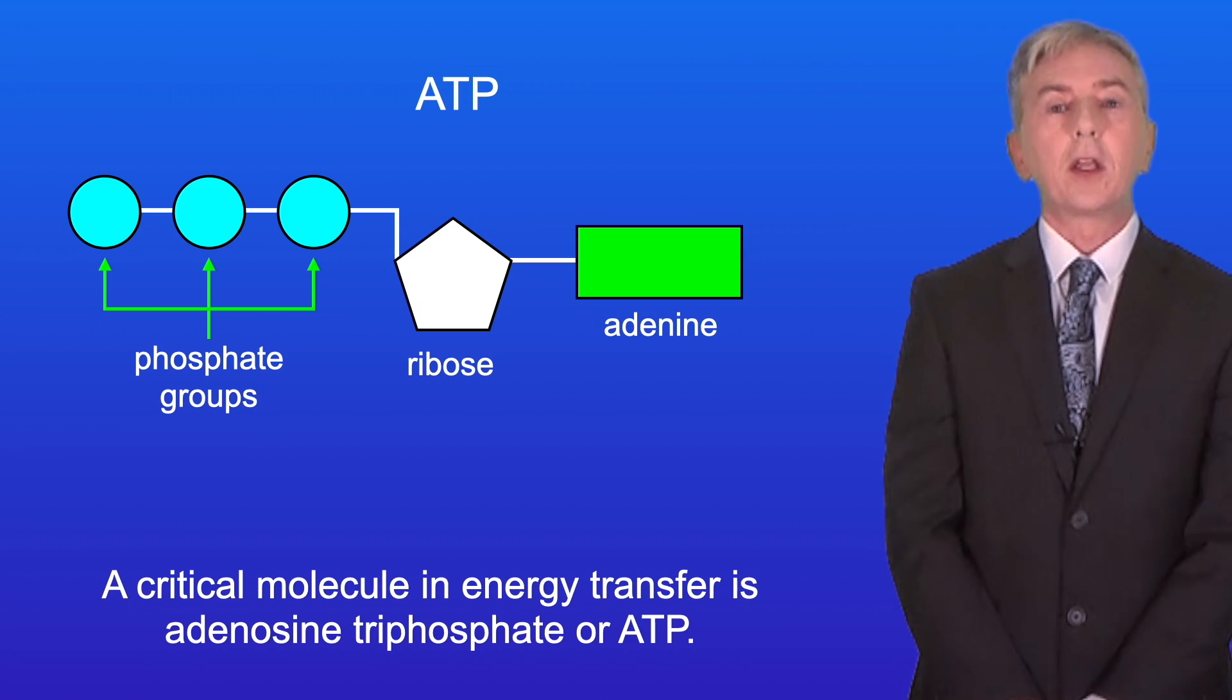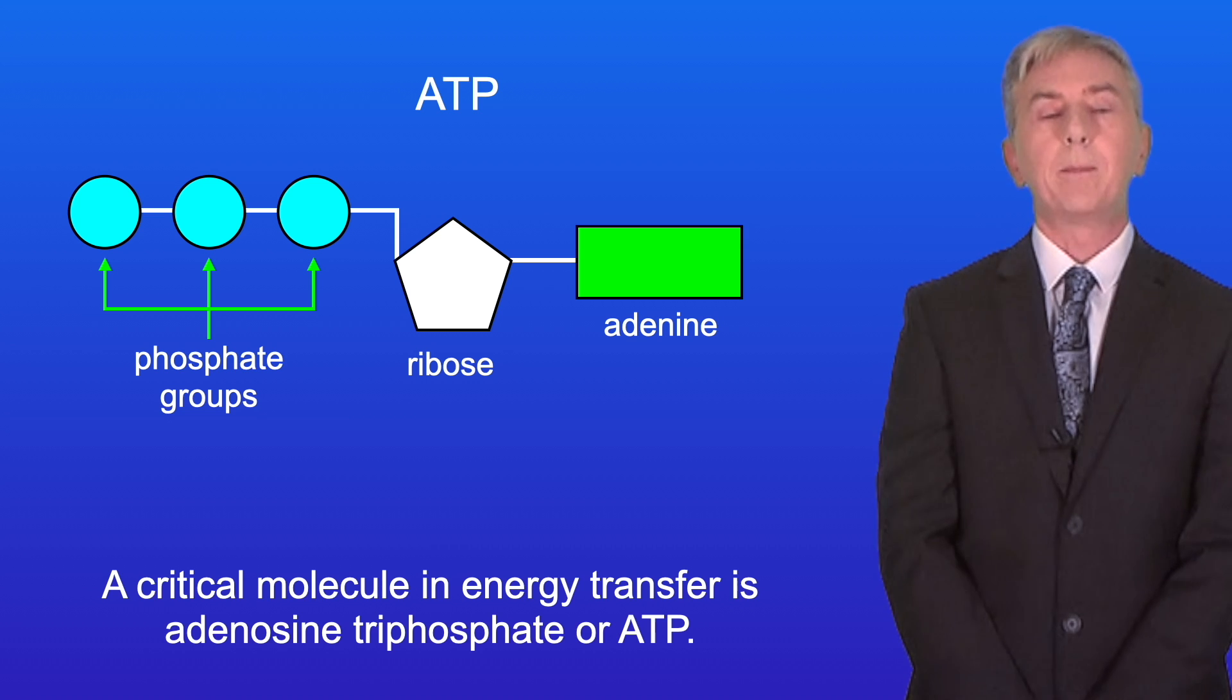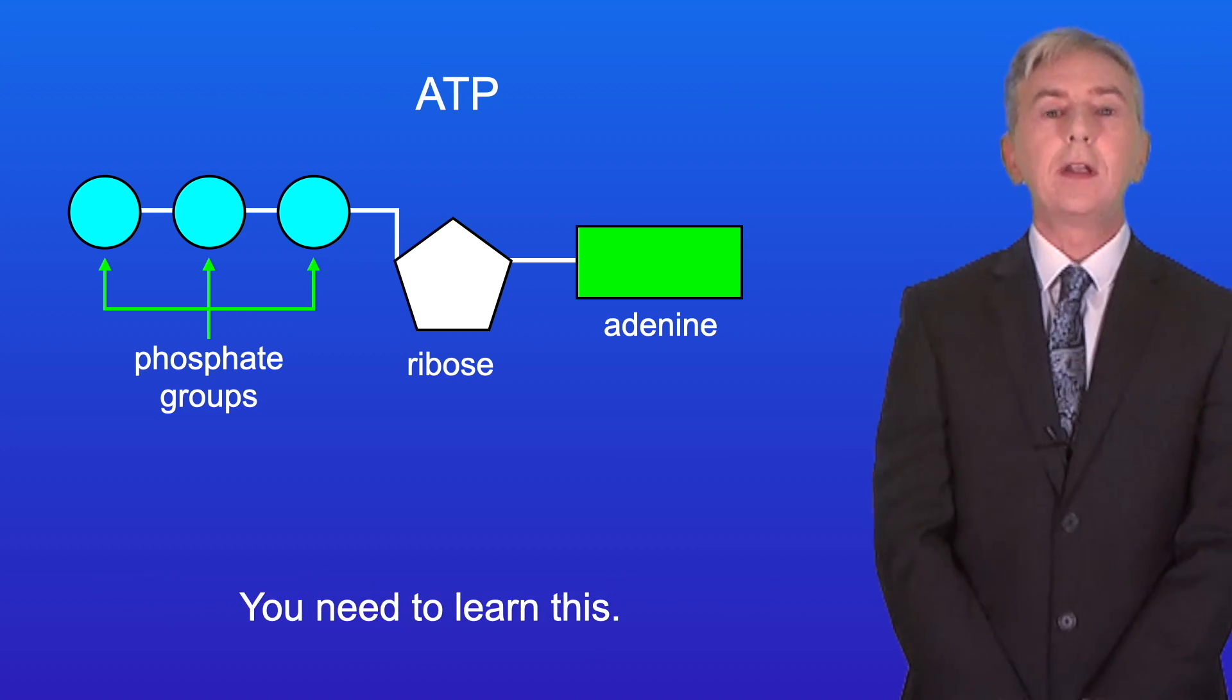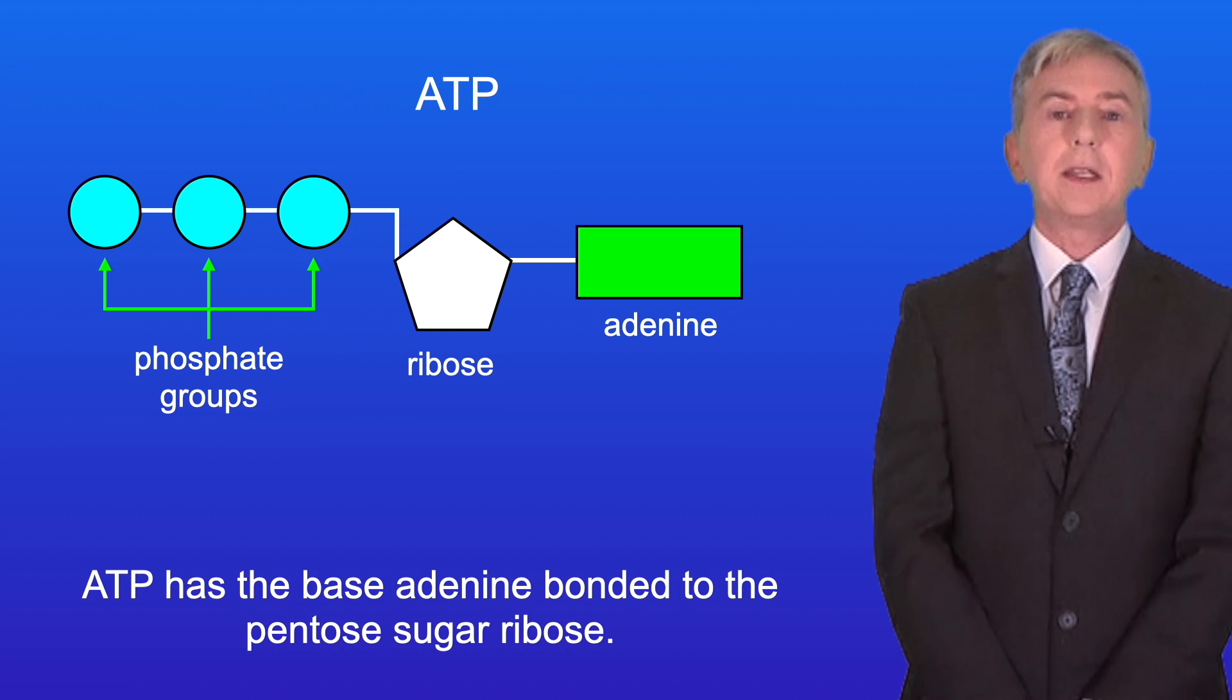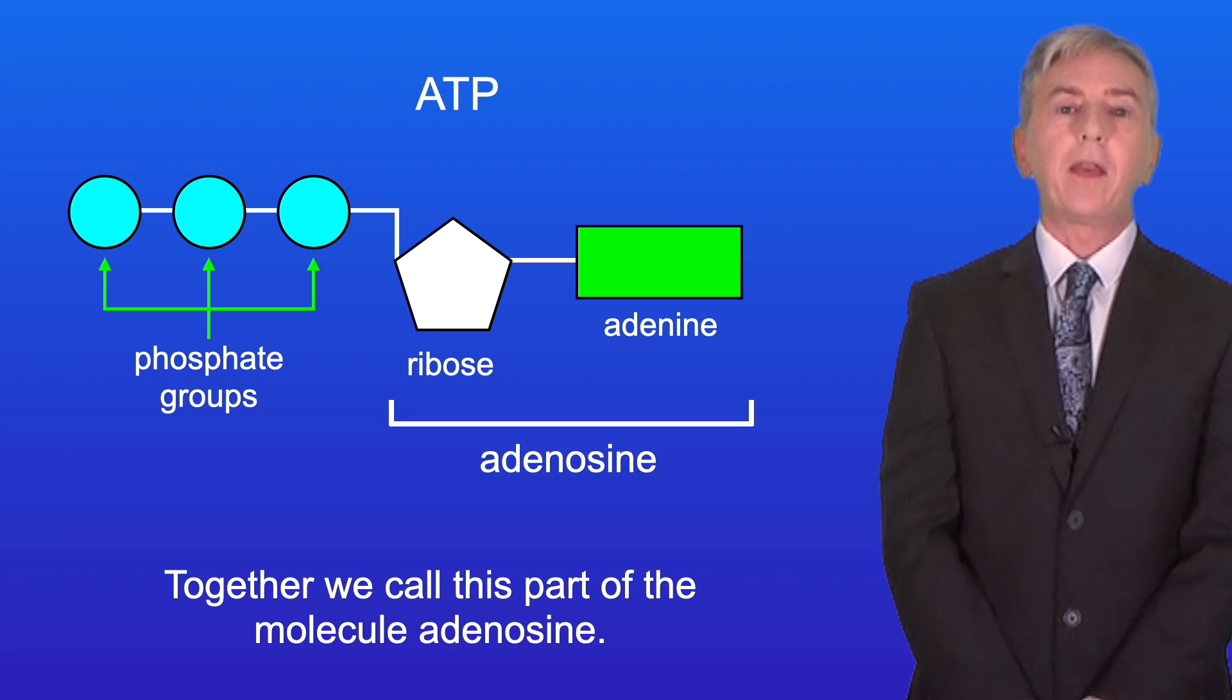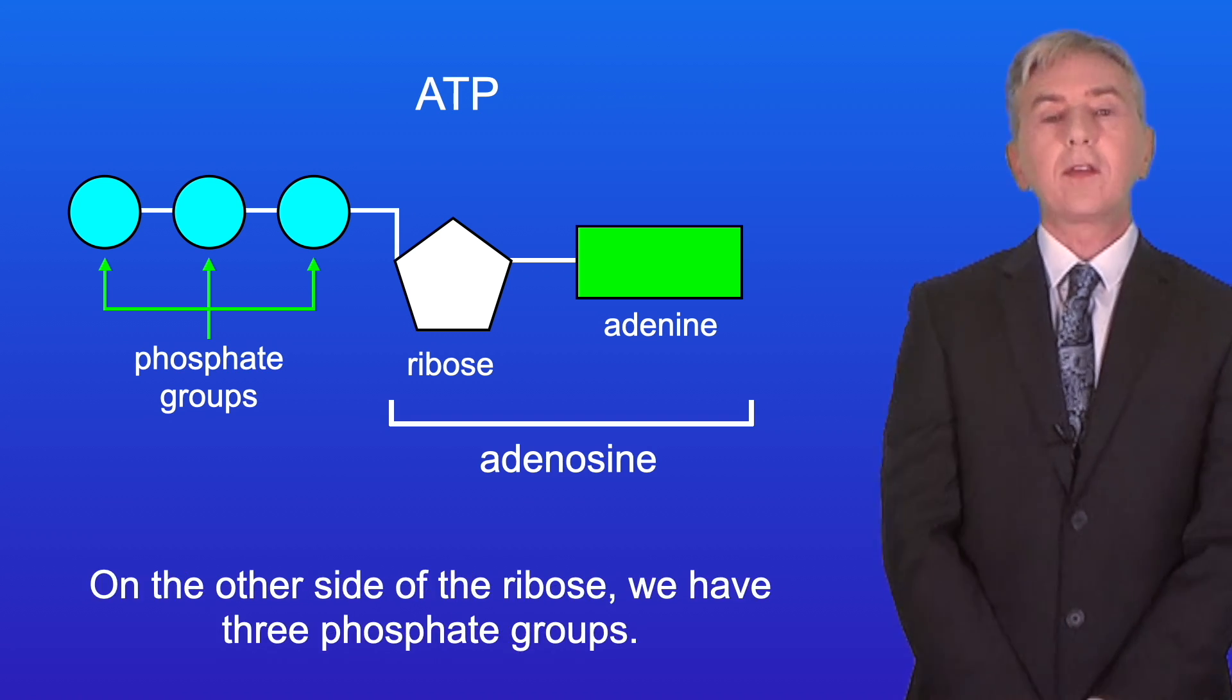Now a critical molecule in energy transfer is adenosine triphosphate or ATP. I'm showing you the simplified structure of ATP here, and you need to learn this. ATP has the base adenine bonded to the pentose sugar ribose, and together we call this part of the molecule adenosine. On the other side of the ribose we have three phosphate groups.